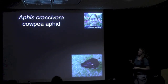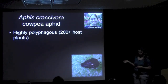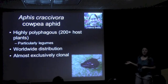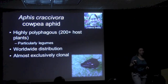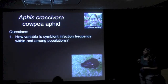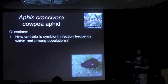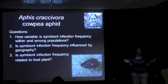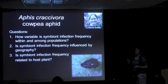Aphis craccivora does have some similarities with pea aphid — it is highly polyphagous, more so than pea aphid, using 200 or more host plants over 19 different families, but it particularly likes legumes as does pea aphid. It's a cosmopolitan aphid, found worldwide. But in contrast with pea aphid, it's almost exclusively clonal — parthenogenetic almost everywhere it's found. Christina's questions were: how variable is symbiont infection frequency within and among populations? Is it influenced by geography? Is it influenced by host plant?